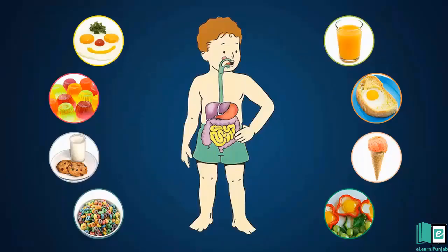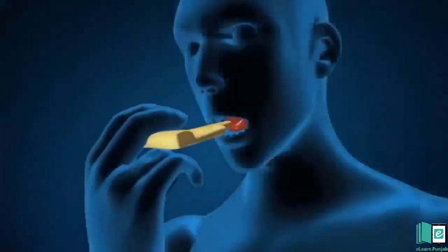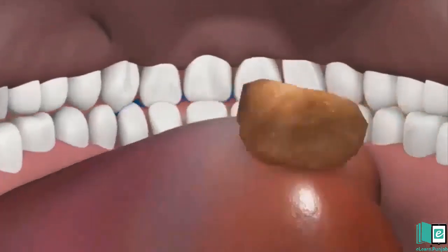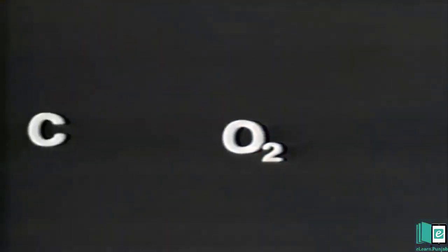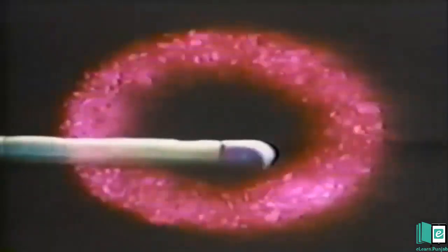Respiratory System. All living things need energy to move and grow. They get energy by breaking down food substances. We need oxygen to break down the food in every cell of our body. Our lungs take oxygen from the air during respiration, or breathing. Respiration is the process by which living organisms use oxygen of air and food to produce energy. Carbon dioxide is also produced during this process. The parts of the body used in the process of breathing form the respiratory system.